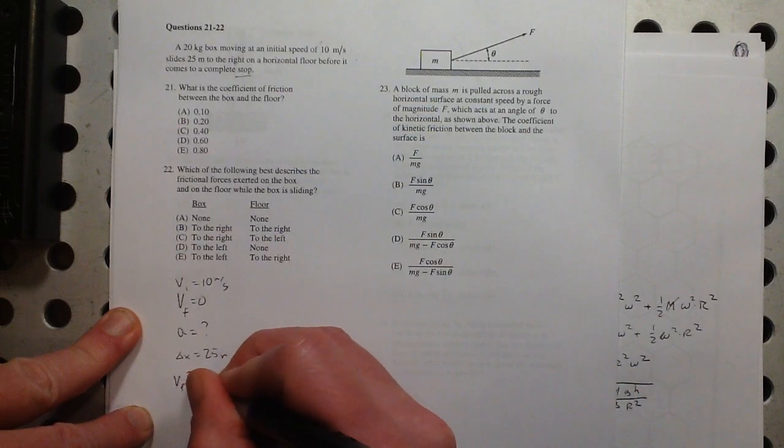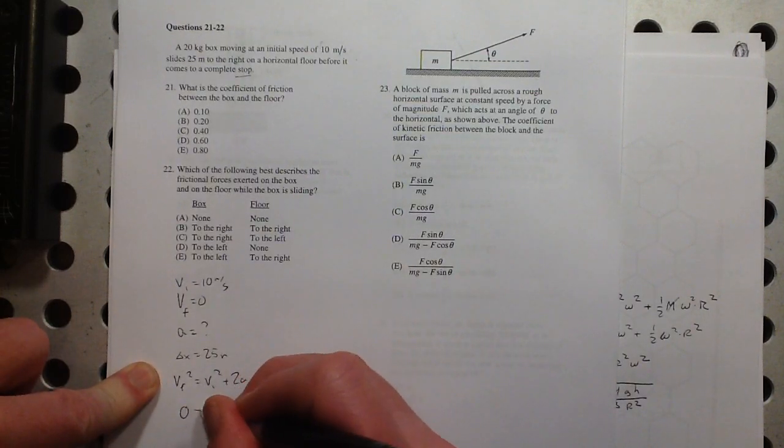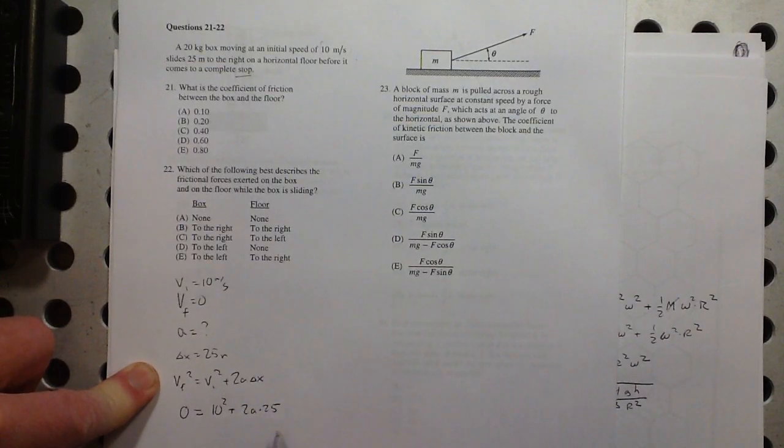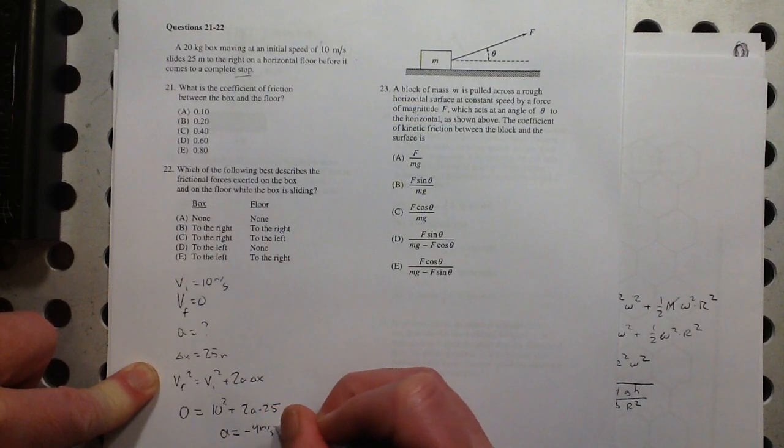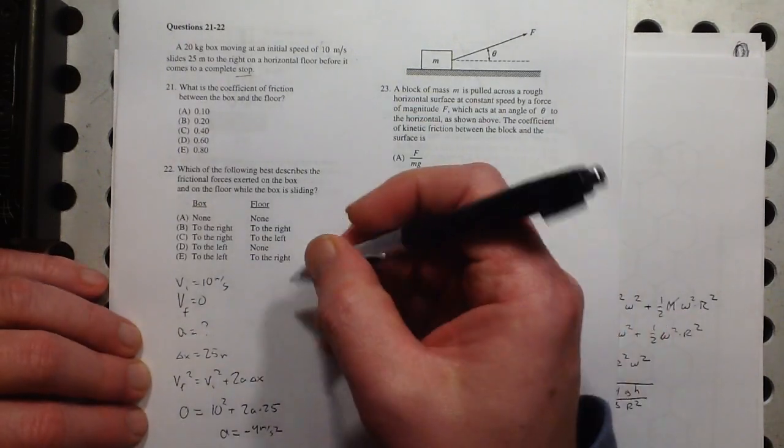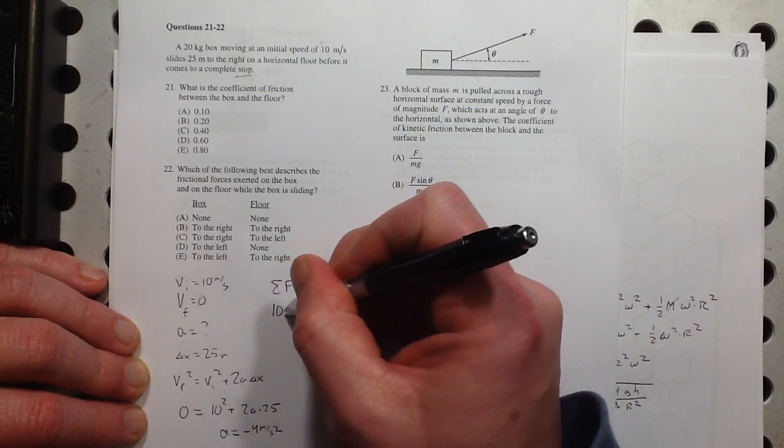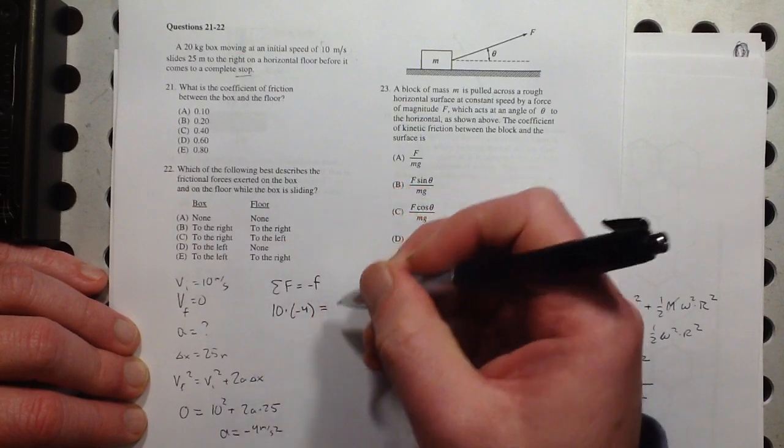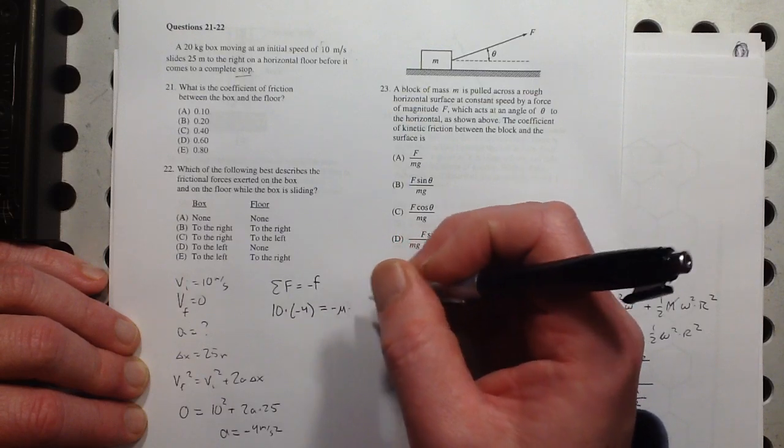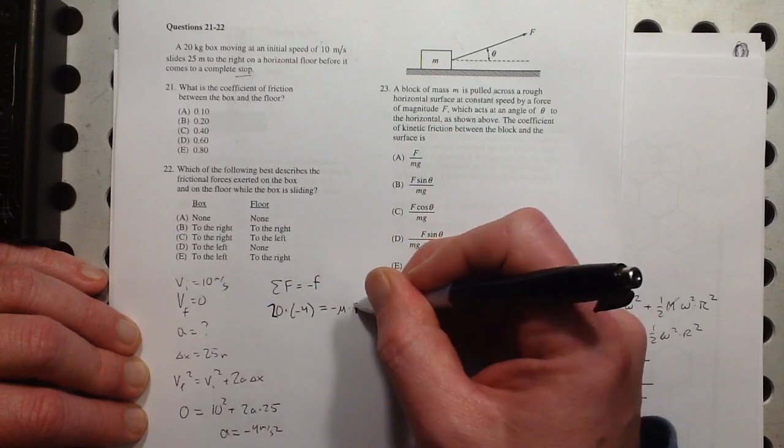So one way would be a kinematics approach. So here, it's going from 10 meters per second to a stop. I'd like to know what the acceleration is. And that does that in 25 meters. So that looks like my vf squared equals vi squared plus 2a delta x. Hey, that's on your equation sheet. Please be familiar with that. So 0 is equal to 10 squared plus 2 times a times 25. So math looks like a has to be negative 4 meters per second squared. That's what the acceleration is.